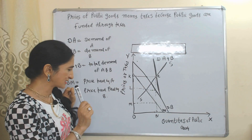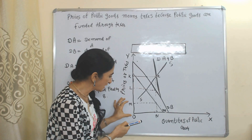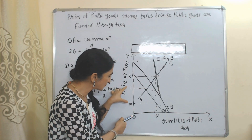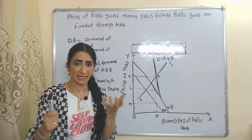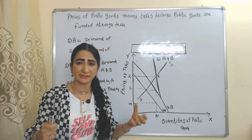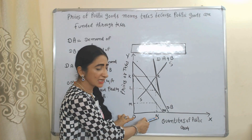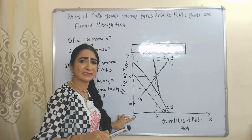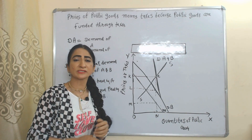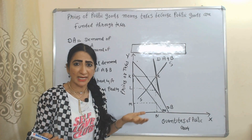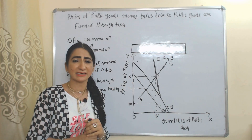One important thing: individual A is paying a much smaller amount of taxes compared to individual B — A pays OM while B pays OL, and OL is more than OM. But still both are receiving the same quantity of public goods. There are even some persons not paying any taxes at all, yet still receiving the same amount of public goods. Why? Because public goods are non-excludable — we cannot prevent any individual from using public goods whether they pay more taxes, less taxes, or no taxes at all.